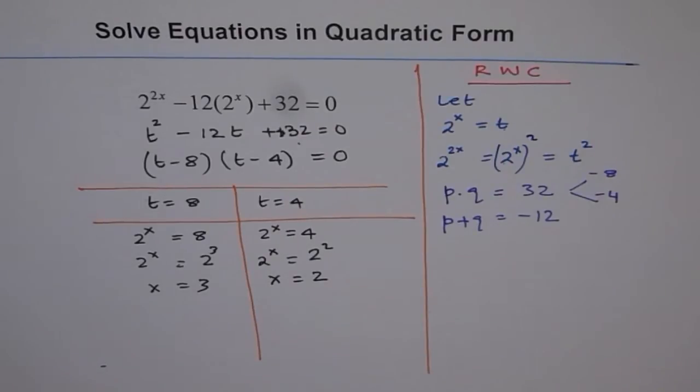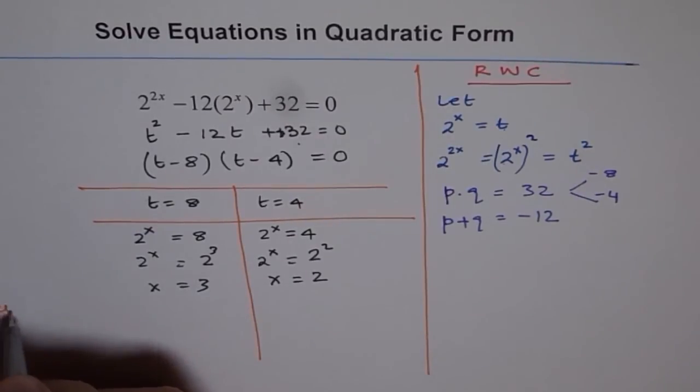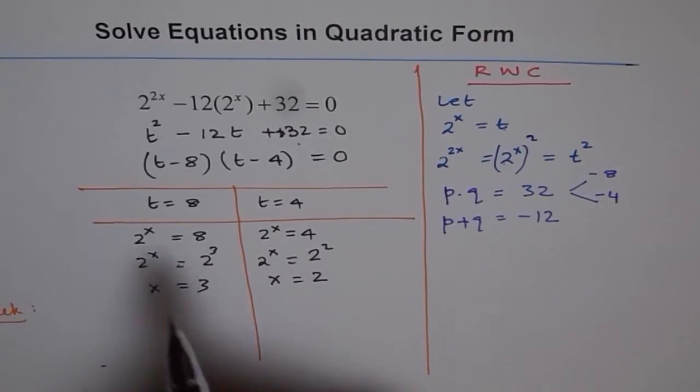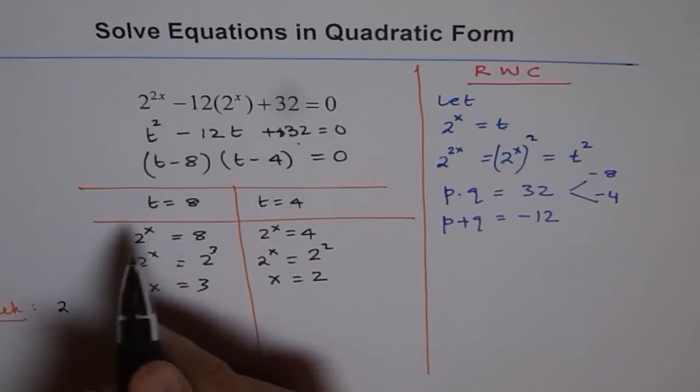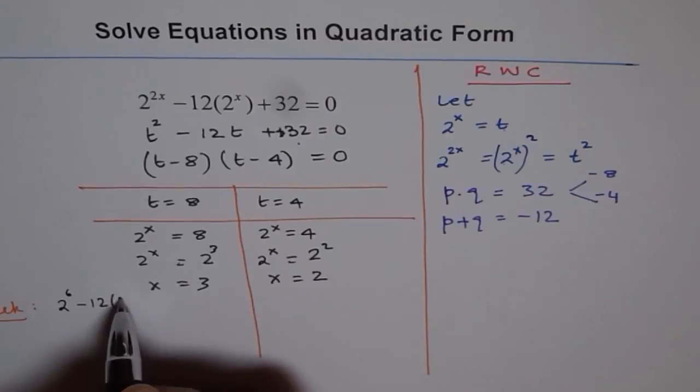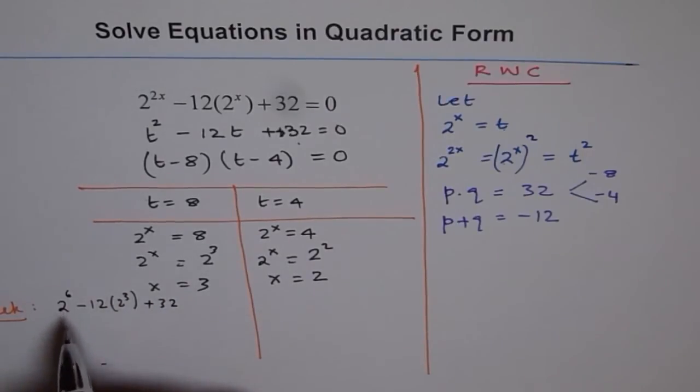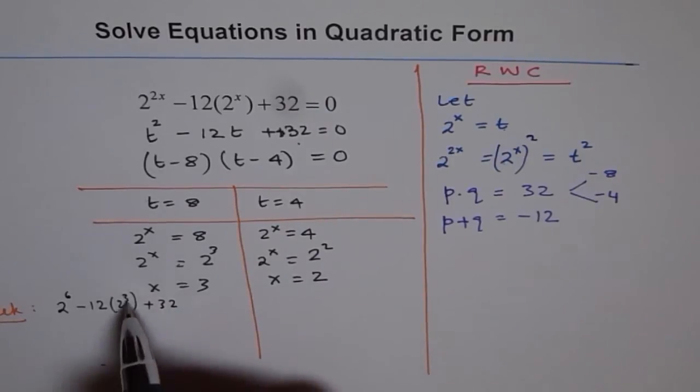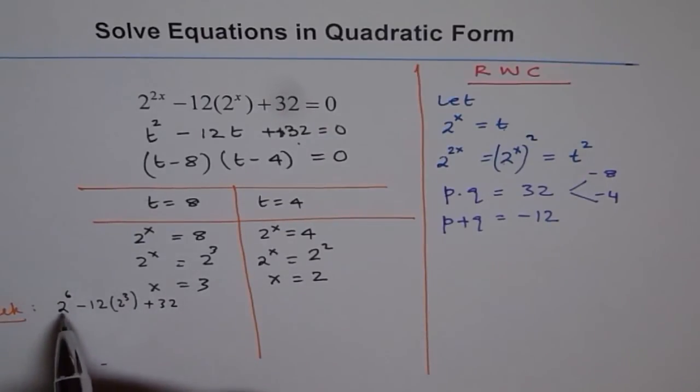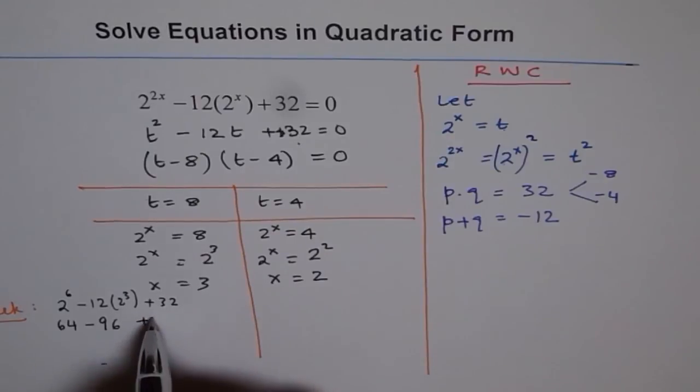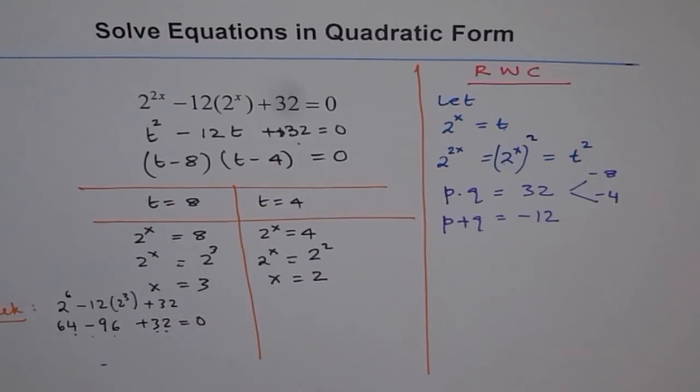Now, when you have a solution, it's a good idea to check your solution. So let's do a check. So if you check for 2 to the power of 3, you get here 2 to the power of (3 times 2) is 6 minus 12 times 2 to the power of 3 plus 32. Now, 2 to the power of 6 is what? Well, let's figure out what is 2 to the power of 3, and then that would be easy. So 2 to the power of 3 is 8. So 8 times 8 is 64. So this is 64 minus, now here we are doing 8 times 12. So 8 times 2 is 16, and that gives us 96 plus 32. So 64 plus 32 is 96. 96 minus 96 is 0. So it works. Good job.